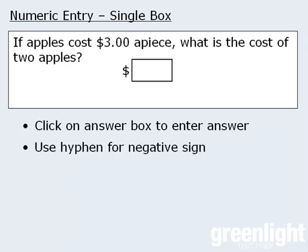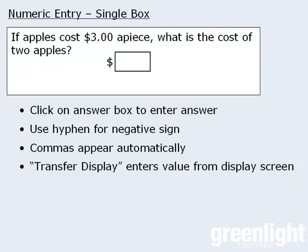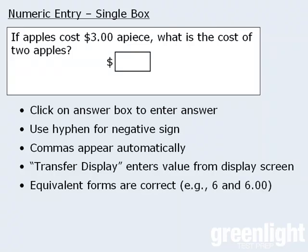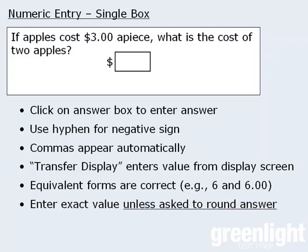Some other key features of this question type are as follows. First, when entering numbers larger than 1,000 the commas that separate every three digits will automatically appear. Next, if you're using the on-screen calculator to perform calculations the calculator's transfer display button will take whatever value is on the display screen and transfer it to the answer box. Next, equivalent forms of a number are all considered correct. For example, entering 6 for this question is the same as entering 6.00. Finally, you must enter the exact value unless you're directed to round the answer.